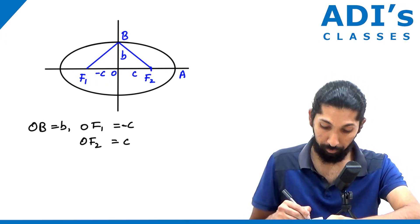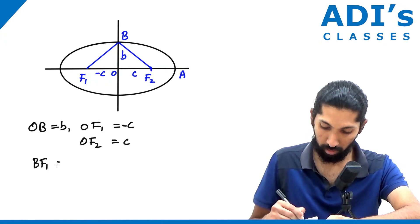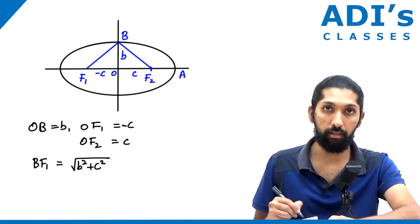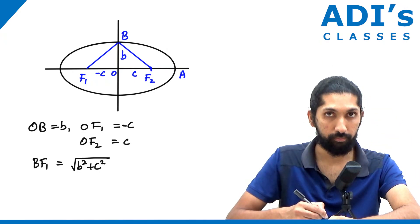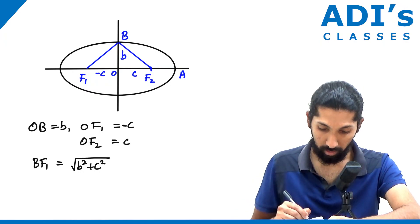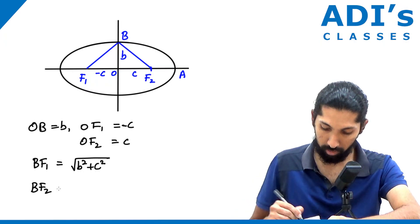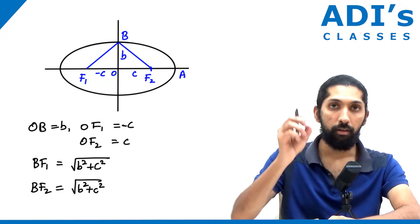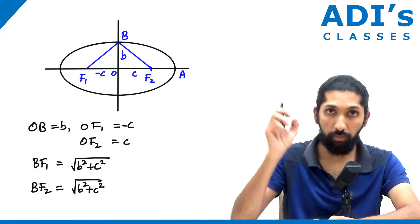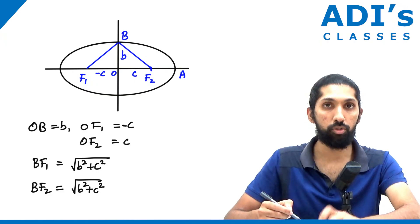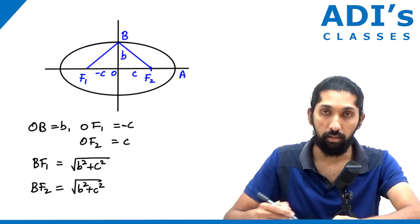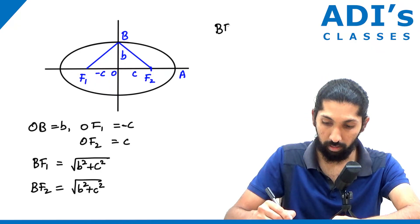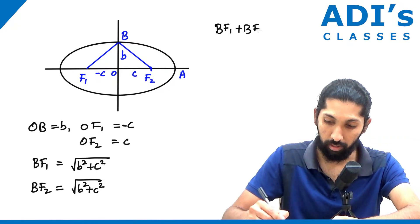That means BF1 is equal to √(b² + c²) — the hypotenuse of the right-angle triangle OBF1. Similarly, BF2 will also be equal to √(b² + c²). Now, according to the definition of an ellipse, BF1 + BF2 should be equal to some constant. So BF1 + BF2 is equal to 2a.